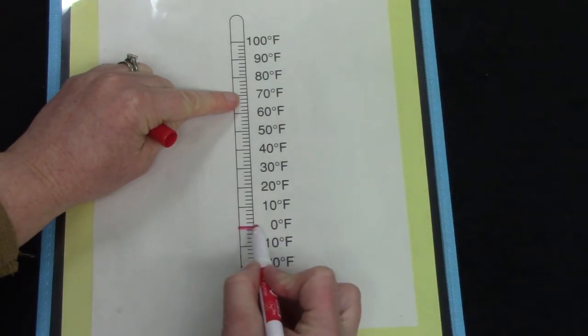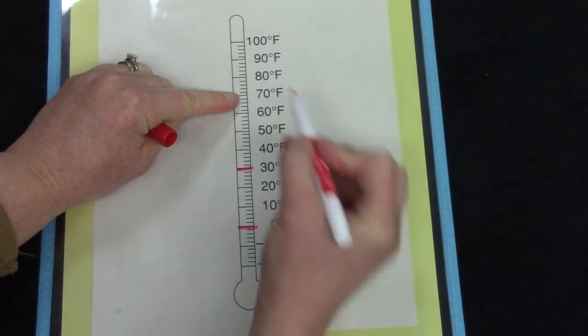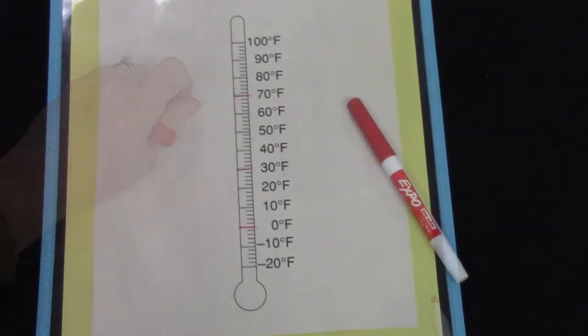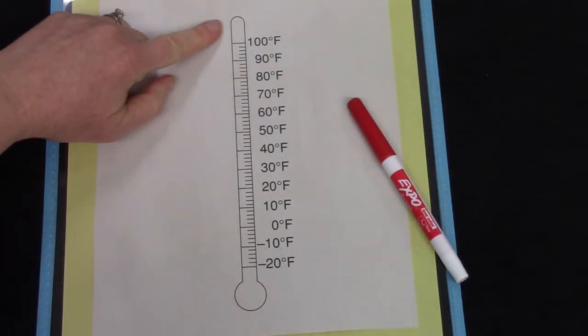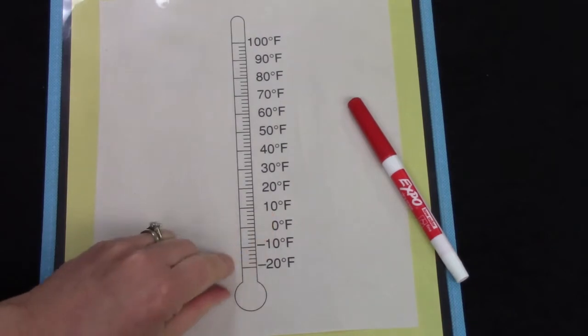We have zero, 30, and 70. Class, when we have been practicing reading a thermometer, we have been practicing to the nearest 10 degrees.